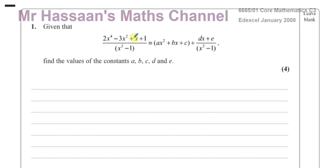The order of an expression is determined by the highest power it has. This numerator has the highest power x to the power 4, so it's considered a quartic — a polynomial of order 4. The denominator is a quadratic polynomial because its highest power is 2, so it's order 2. Since the numerator is of a higher order than the denominator, it's an improper fraction and it will split up into a whole number part and a proper fraction part.